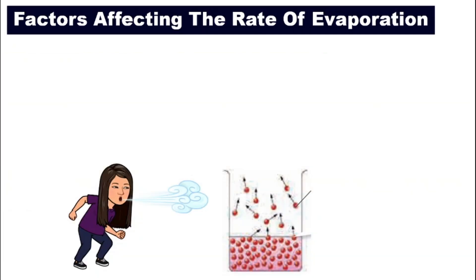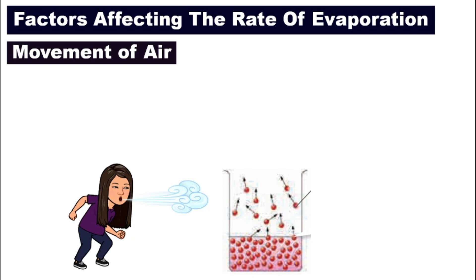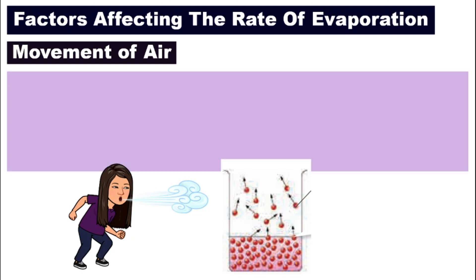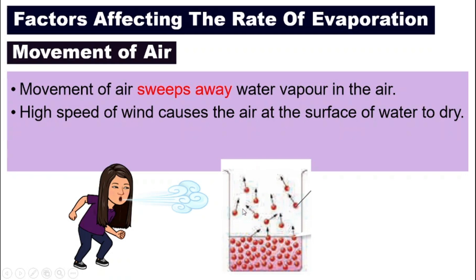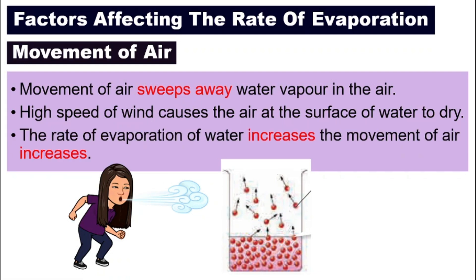Let's move on to factor number four, our last factor: the movement of air. If there is wind — movement of air means there is wind — it will blow away or sweep away the water vapor in the air. So there will be more empty space, enabling the water molecules to escape easier. The rate of evaporation of water will increase if the movement of air increases.